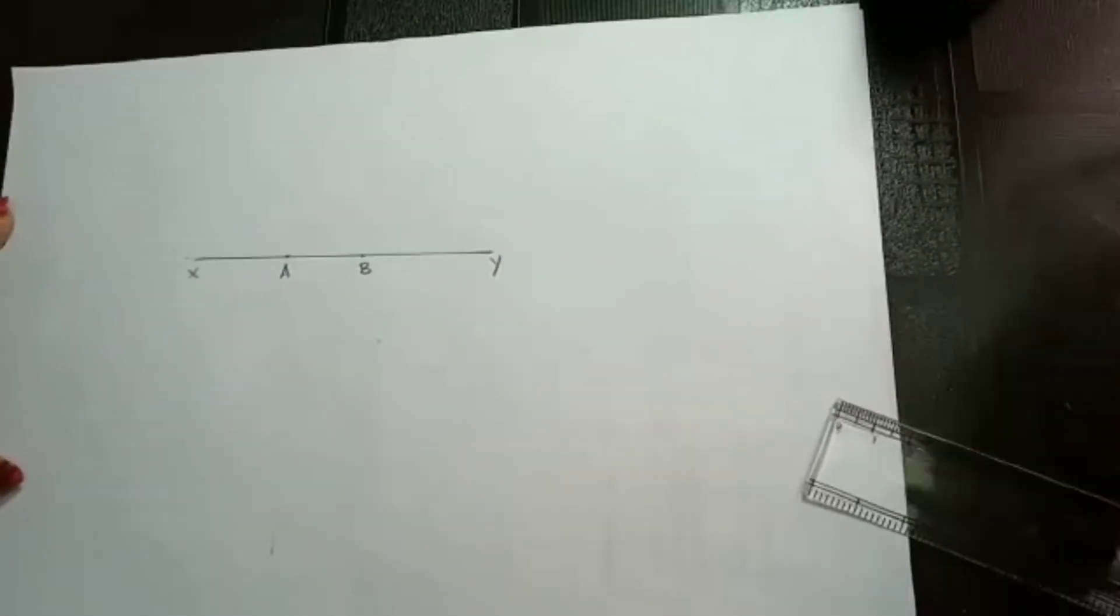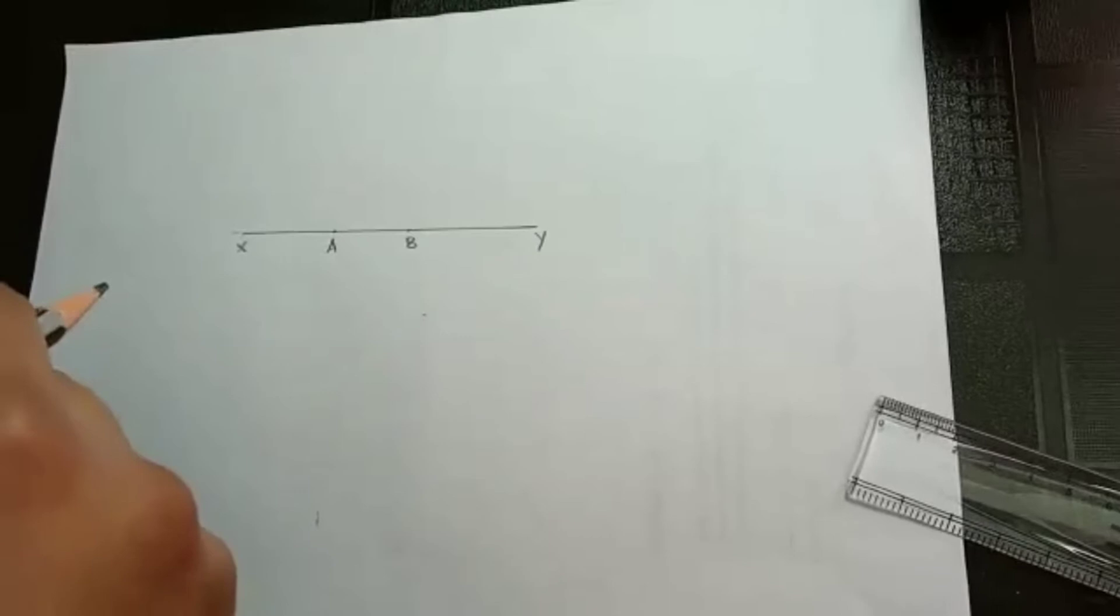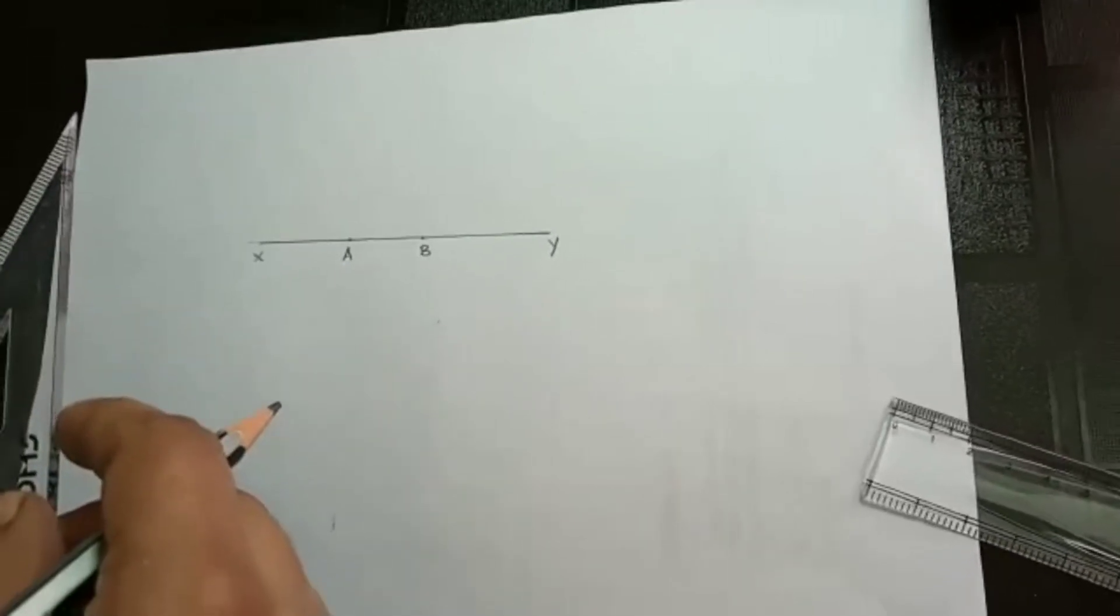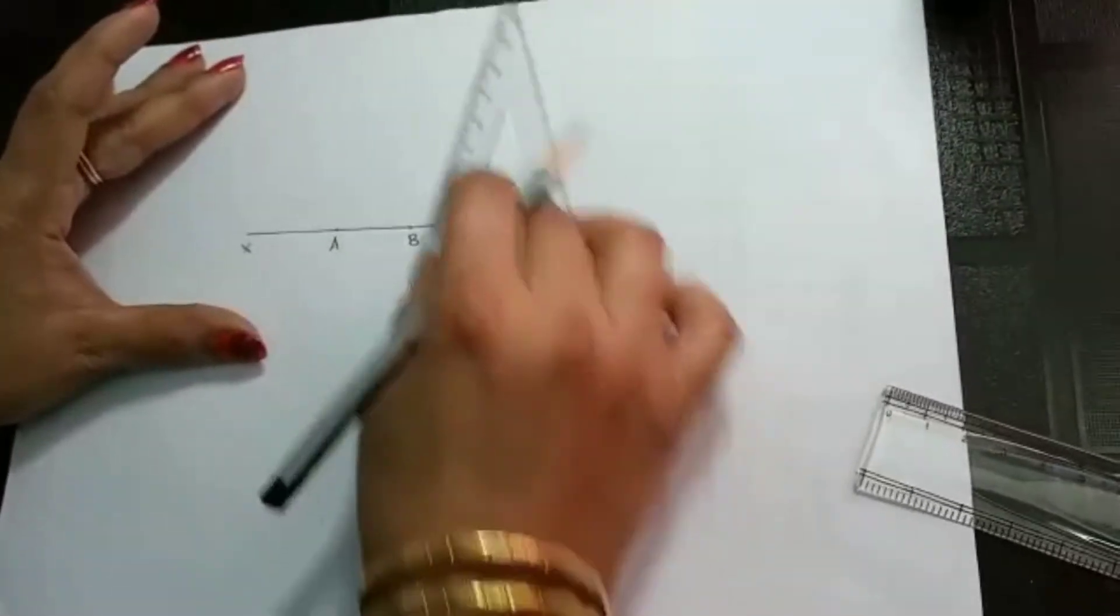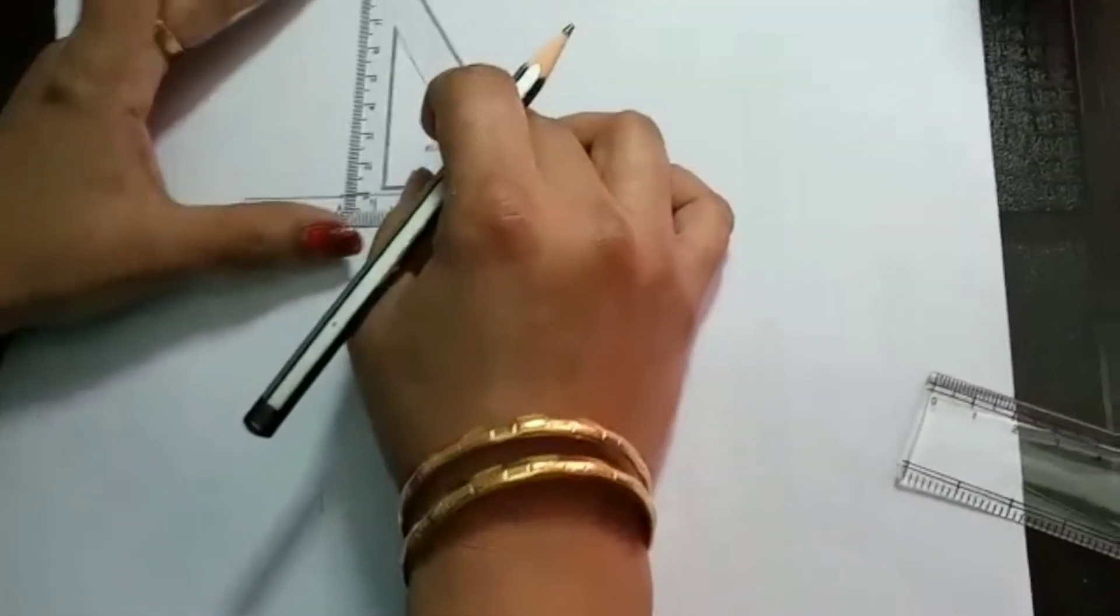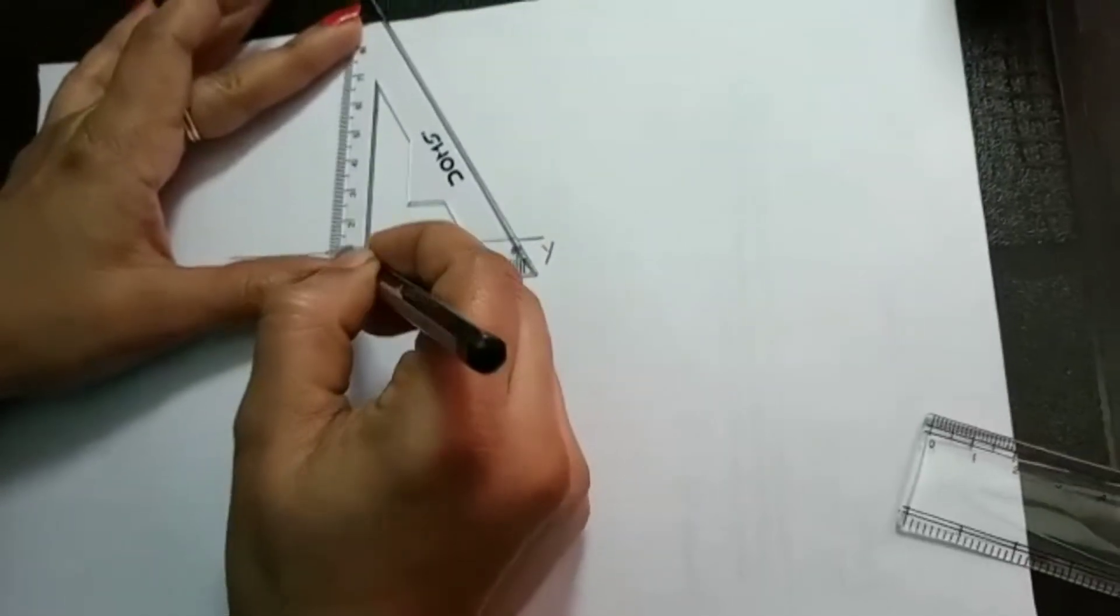So next we need a set square. So here in the question the width is given. The width AD is given as 1 cm. So from here you have to draw 1 cm. So for that, see here there is a point I just marked.